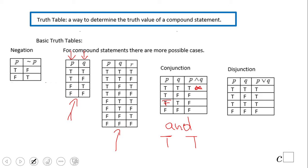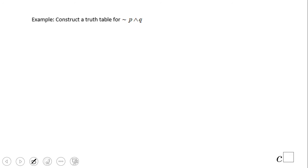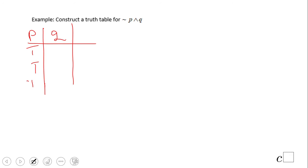The disjunction (∨) truth table is also easy to remember: the only time the disjunction is false is when both statements are false — the last row. All other combinations are true. So let's see how we construct a truth table. For P and Q, we list: true-true, true-false, false-true, false-false — those are all the possible choices.